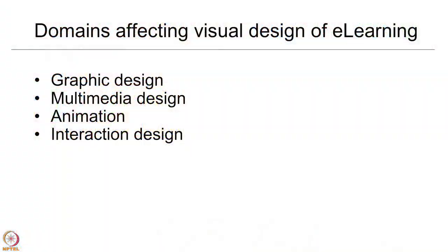What we have found out is that the domains which affect this decision making are distributed over four important aspects. The first is graphic design, or what we can call visual design. We have multimedia design which talks about moving or non-static graphics in terms of videos, animations, and motion graphics. The third one is animation, which is completely digitally created motion as against the video-captured motion.